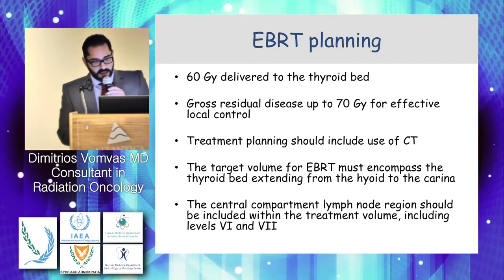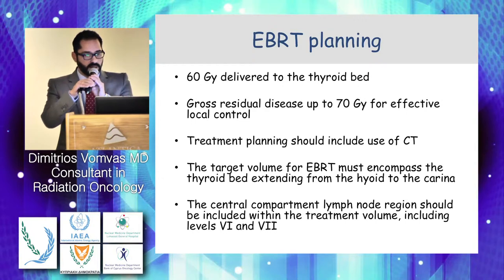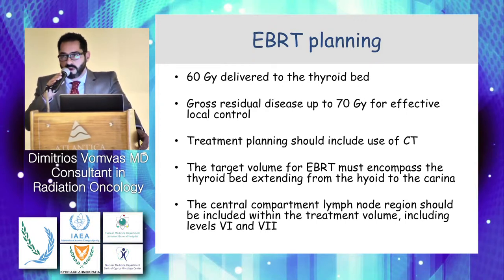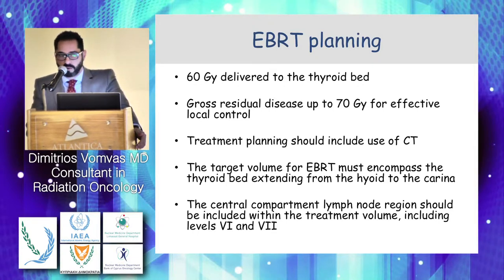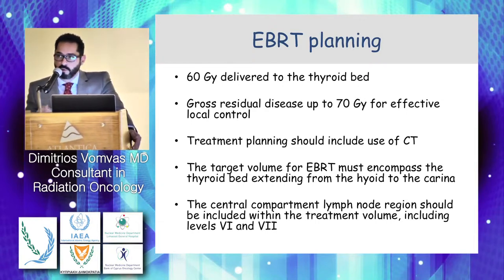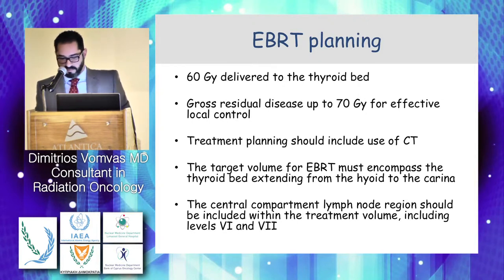The dose we must give in the adjuvant setting when we have subclinical disease is about 60 Gy delivered to the thyroid bed. When we have gross residual disease, we have to escalate the dose to 70 Gy for effective local control. We always use CT scan for treatment planning, and the target volume encompasses the thyroid bed extending from the hyoid bone to the carina. We also cover different levels of lymph nodes in the neck depending on whether lymph nodes are positive or negative.